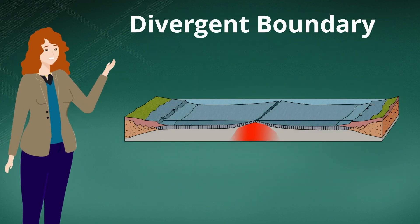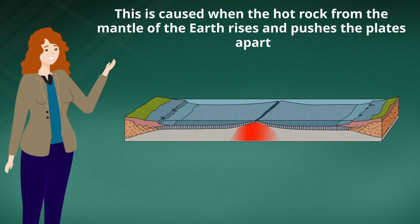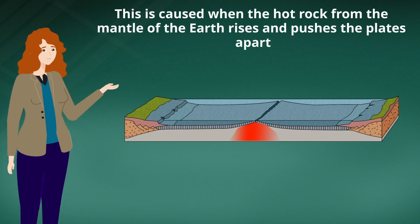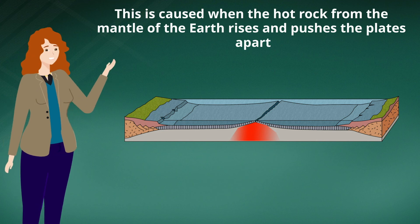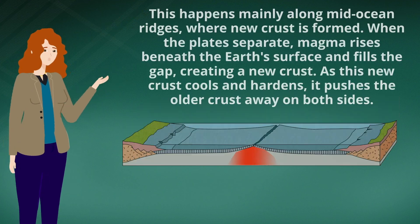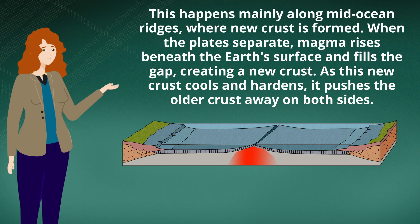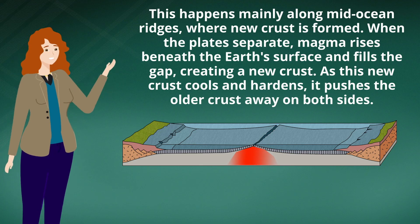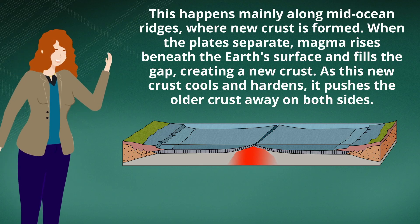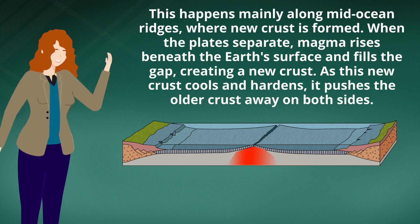At a divergent boundary, hot rock from the mantle of the Earth rises and pushes the plates apart. This happens mainly along mid-ocean ridges where new crust is formed. When the plates separate, magma rises beneath the Earth's surface and fills the gap, creating new crust.